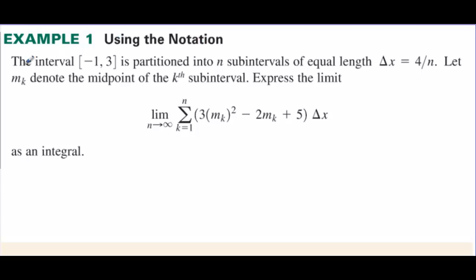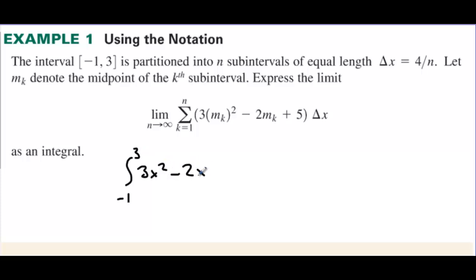Using the notation: the interval negative one to three is partitioned into n sub-intervals of equal length. Let m sub k denote the midpoint of the k-th sub-interval. When we add up all the rectangles under this curve, we're finding the integral from negative one to three of 3x squared minus 2x plus 5. Here's your 3x squared, your 2x, and your plus five. And instead of writing delta x, we write dx.